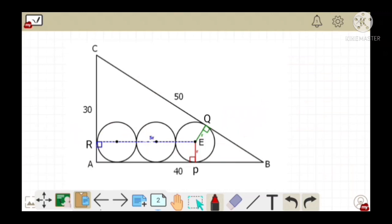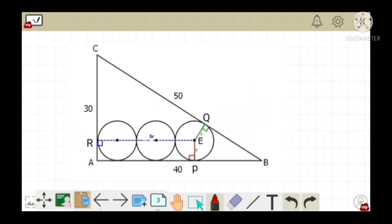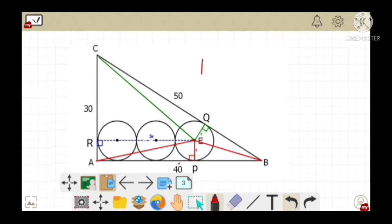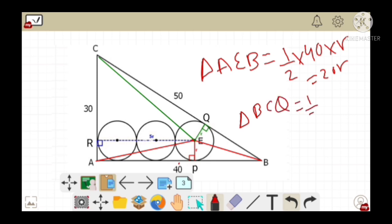Now let's draw the line from point E to each of the three vertices. Let's join AE, EB, and finally EC. The area of triangle AEB equals 1/2 times 40 times R, which equals 20R. Likewise, the area of triangle BCQ equals 1/2 times R times 50, which equals 25R.